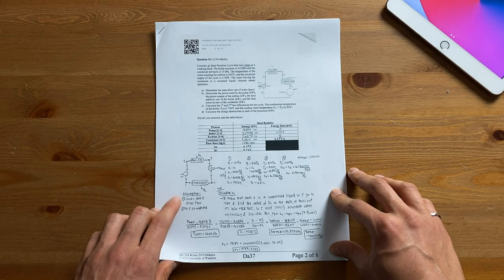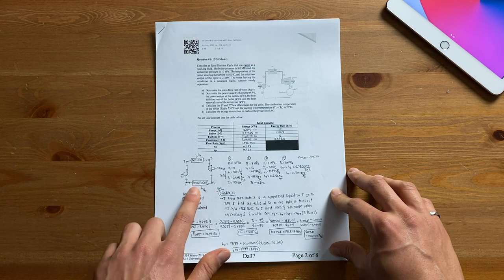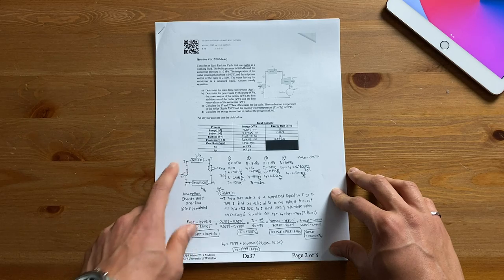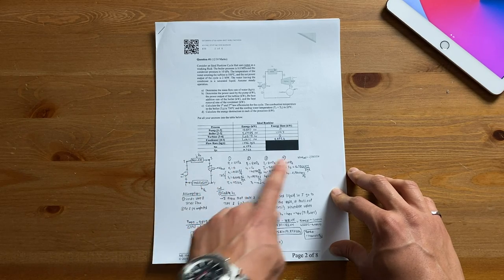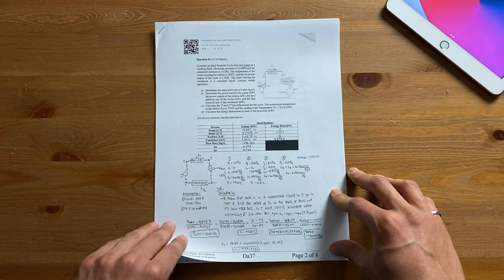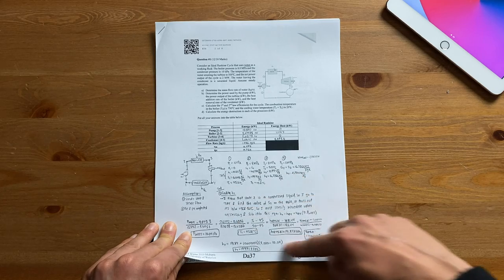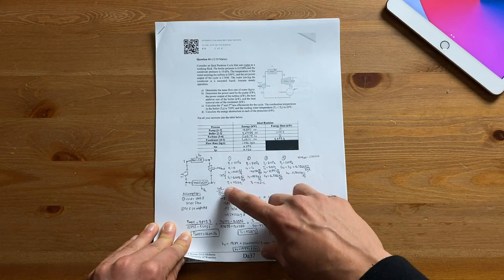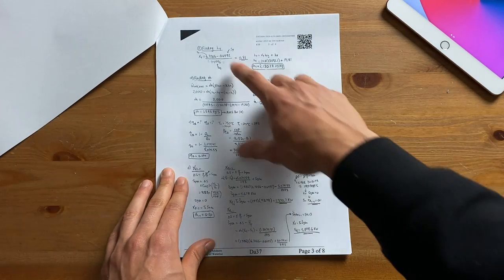First, always set your assumptions because almost every engineering question has assumptions that you need to make. Second, draw a label diagram of what's going on in the question so you better understand it. Third, for your solution it's always good practice to label and number all your steps especially when the question is this long.